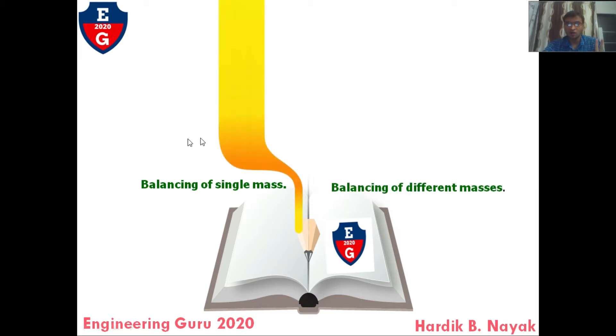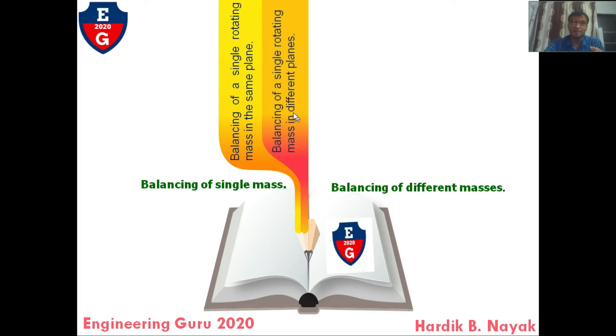Balancing of rotating masses is divided into two main types: first, balancing of single masses, and second, balancing of different masses. In the previous video, we already covered balancing of single rotating mass in the same plane and balancing of single rotating mass in different planes.